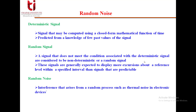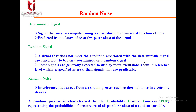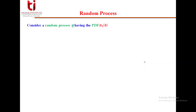From this we can define random noise: interference that arises from a random process — such as thermal noise in electronic devices — is called random noise. It arises through a process that cannot be predicted. This random process is mainly characterized by the probability density function (PDF), which represents the probabilities of occurrence of all possible values of a random variable.